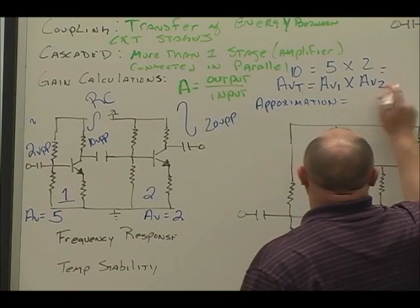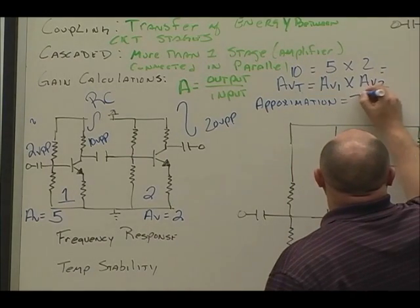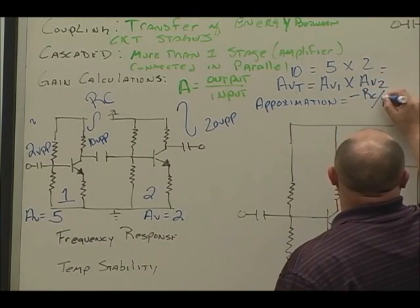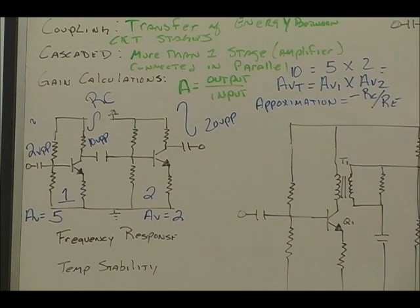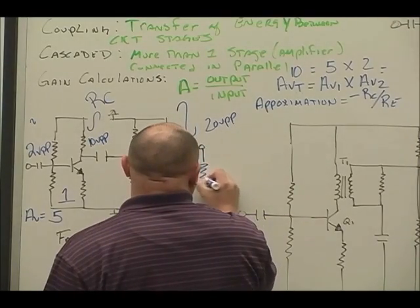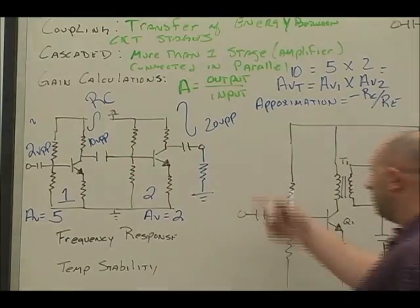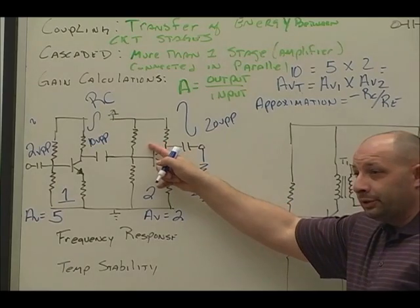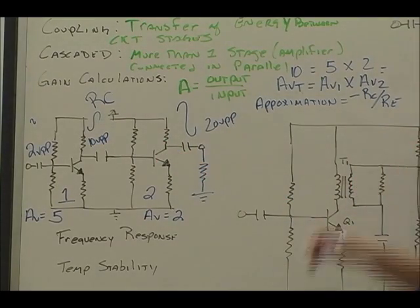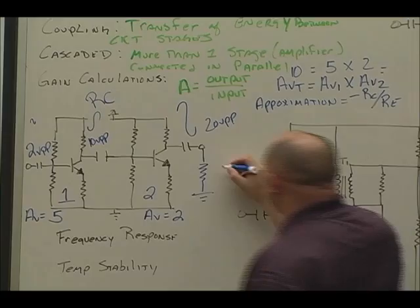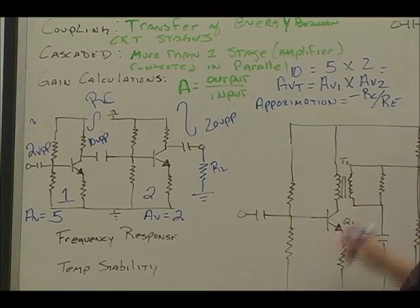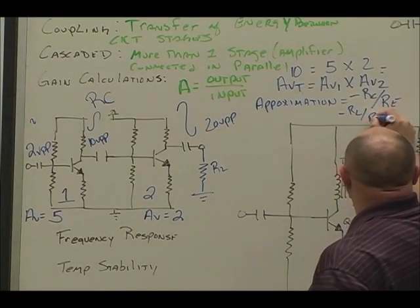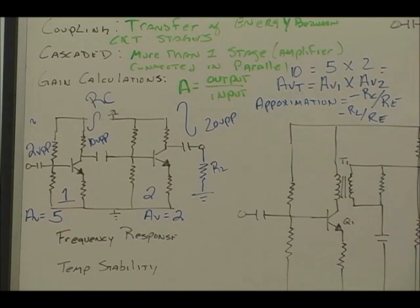So a formula might be approximation of gain would be the collector resistor divided by the emitter resistor. Or if I actually had a load attached, like let's say here, then it would be the load. But now you have to take the parallel equivalent because the load, collector resistor, parallel to the load itself. And that's what you'd have to do. So you may see it this way as well. A load divided by emitter resistor.